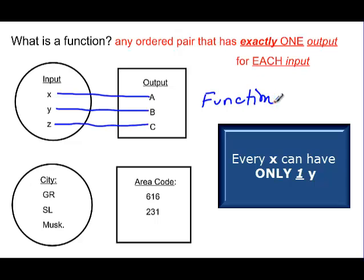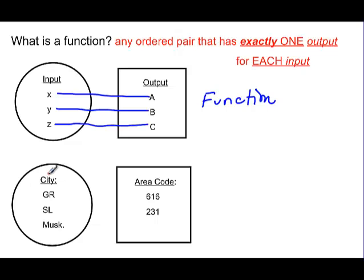Let me show you another example of a function. Here our input is our city and our output is our area code. If I have the city Grand Rapids, its area code is 616, so it maps to 616. Spring Lake, where I live, also has an area code of 616.